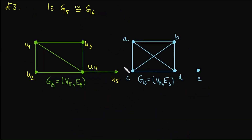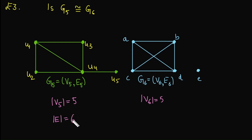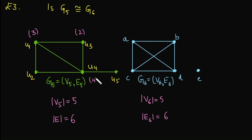Let's check whether G5 and G6 are isomorphic. G5 has 5 vertices and G6 also has 5 vertices. The total number of edges in G5 is 6, and in G6 is also 6. So vertex count and edge count are both the same. Next we check the degree sequence. For graph G5, the degrees of the vertices are 3, 2, 4, 1, and 2. We now write the degree sequence for G5.